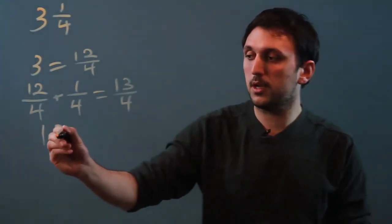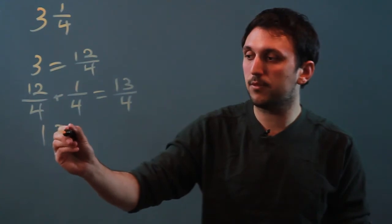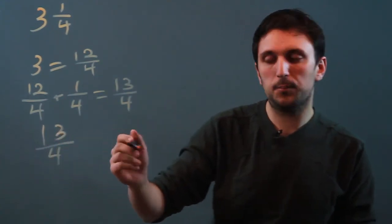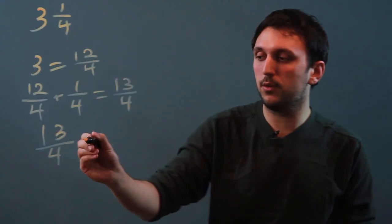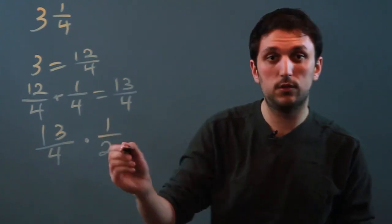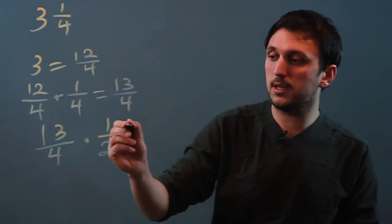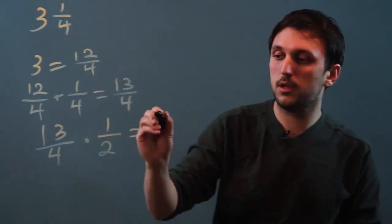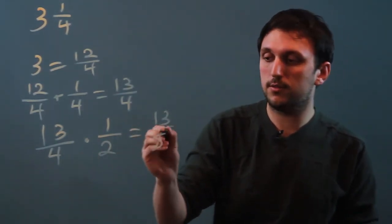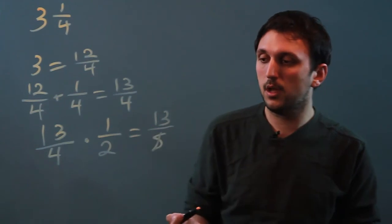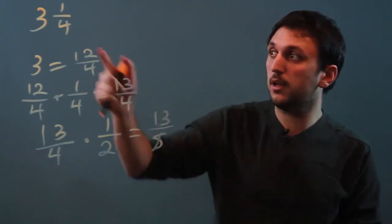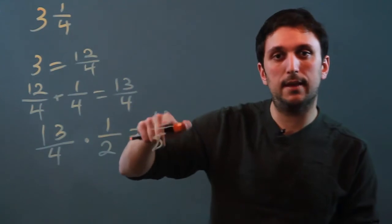So we want to cut it in half. We say 13 over 4. We could divide it by 2, but an easier thing to do is to multiply by 1 over 2. So 13 times 1 is 13, and 4 times 2 is 8. So 13 over 8 — that's how we cut 3 and 1 fourth in half.